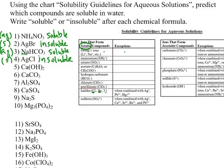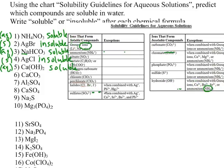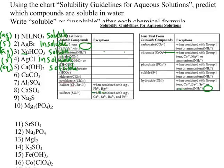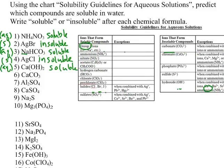Number 5: calcium hydroxide. There's a rule for hydroxides on this side of the chart — hydroxides tend to be insoluble, except when the hydroxide is with calcium. So calcium hydroxide is soluble and aqueous. Number 6: calcium carbonate. There is a carbonate rule — carbonates are insoluble, except when combined with Group 1 ions or ammonium. Calcium is neither, so calcium carbonate is insoluble and will stay a solid when put in water.